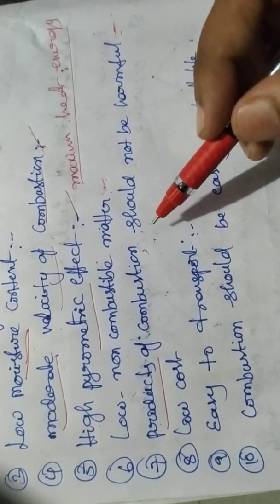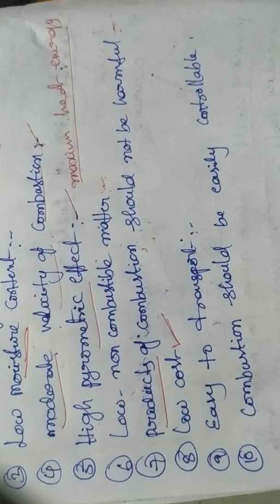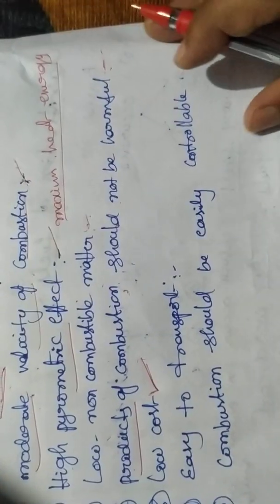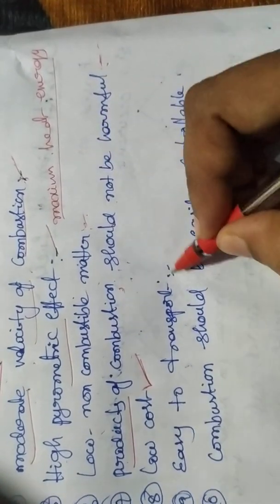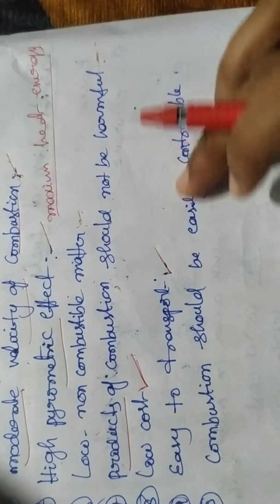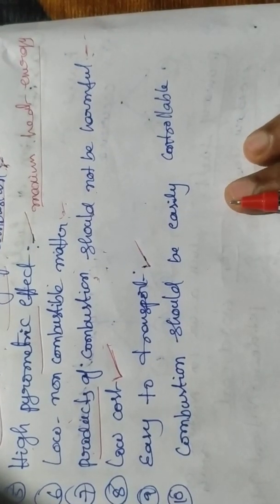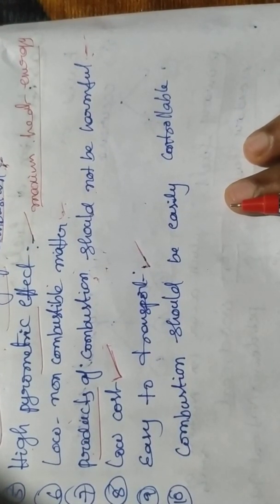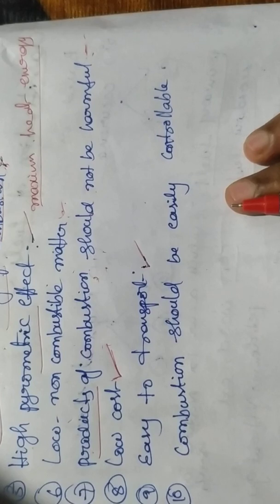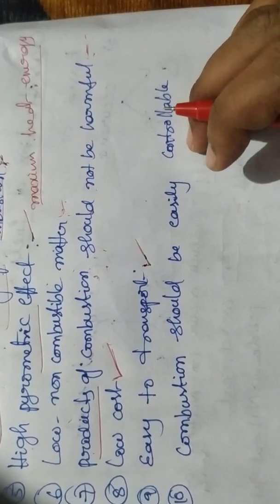Good fuel should be low cost and easy to transport. The combustion should be easily controllable — that is, the combustion of fuel should be easy to start or stop according to requirements.